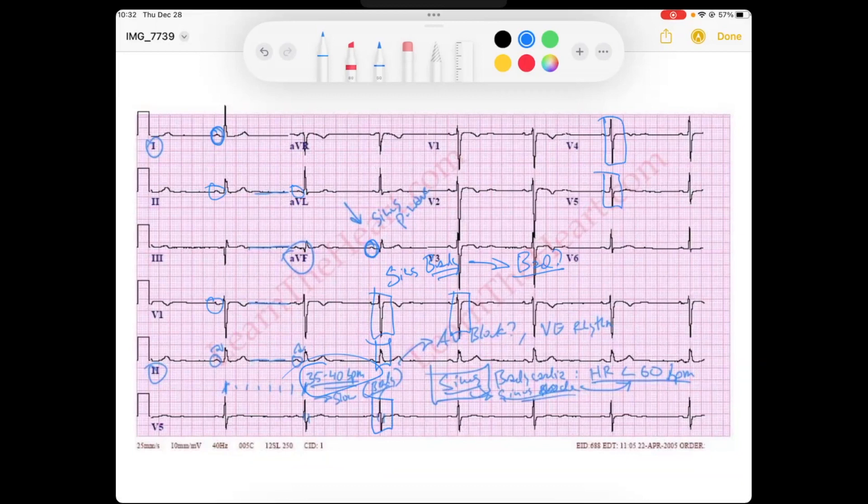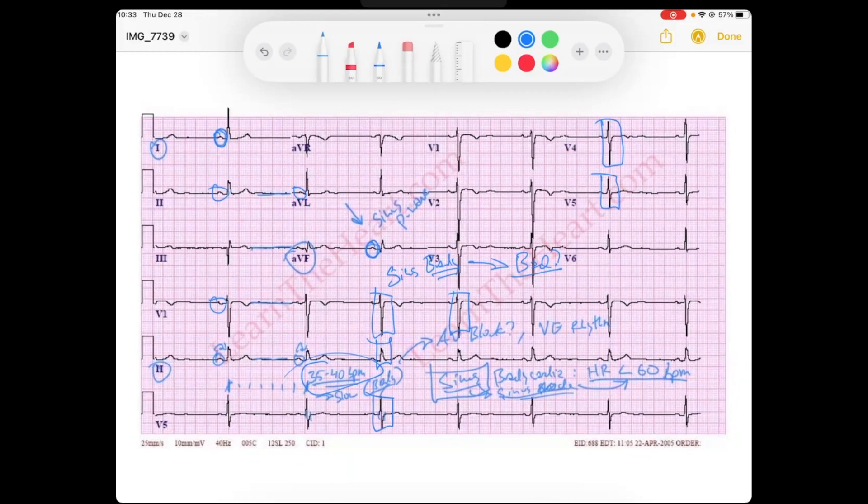And when you look at that P wave that is occurring before the QRS, you determine it's sinus, and you determine there's no AV blocks. And you look at the rate of sinus node firing, we said that that sinus node is firing quite slow, less than 60. So, we've got a sinus bradycardia.